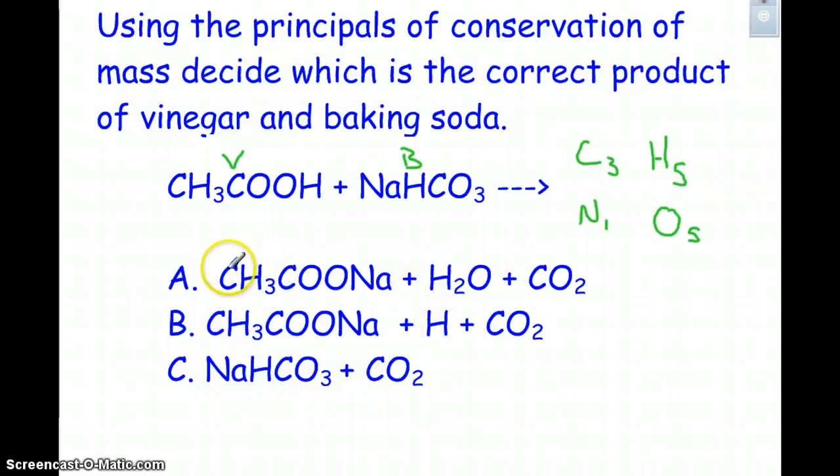Then it has to be this one. We have three carbons, that checks out. We have five hydrogens, that checks out. We have five oxygens, and we have one sodium. So this has got to be our correct answer. Because we have the same amount of atoms in the ingredients as we do in the product. So using conservation of matter, you can figure out what the chemical formula is going to be of a reaction.